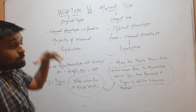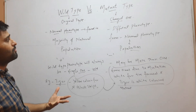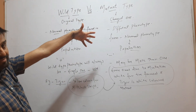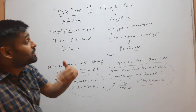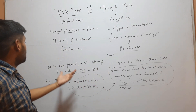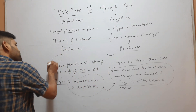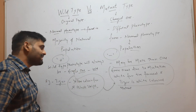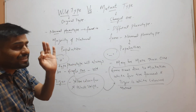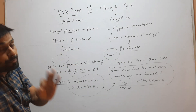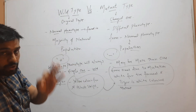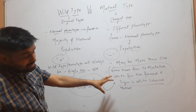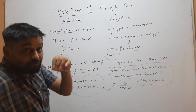Wild type means normal phenotype that is present in the majority of organisms. Mutant type is a different phenotype — a changed phenotype, changed from normal. Wild type is designated by a positive sign; mutant type is designated by a negative sign. Wild type is always single — one in a population for a certain phenotype. But mutant type may be more than one.